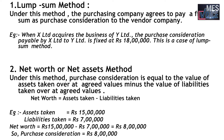Second, the net worth or net assets method. Under this method, purchase consideration equals the value of assets taken over at agreed values minus the value of liabilities taken over at agreed values. So, net worth or net assets equals assets taken minus liabilities taken. For example, assets taken by the purchasing company for Rs. 15 lakh and liabilities taken for Rs. 7 lakh. So net worth or net assets equals Rs. 15 lakh minus Rs. 7 lakh, which equals Rs. 8 lakh. This is the amount of purchase consideration.